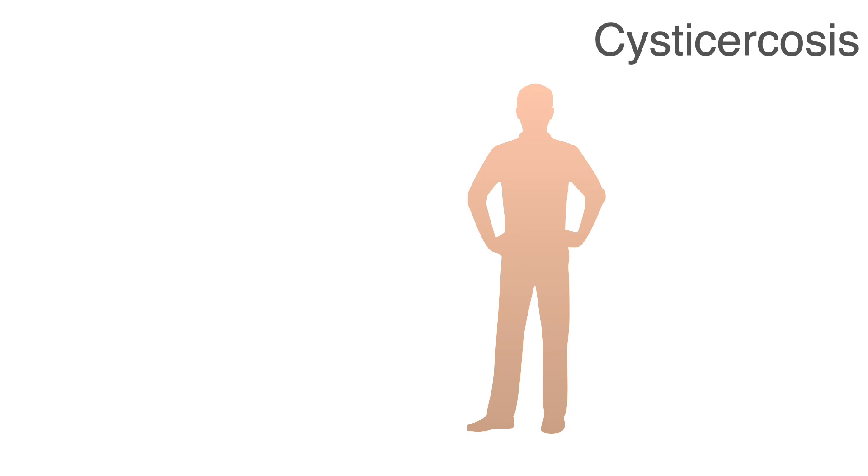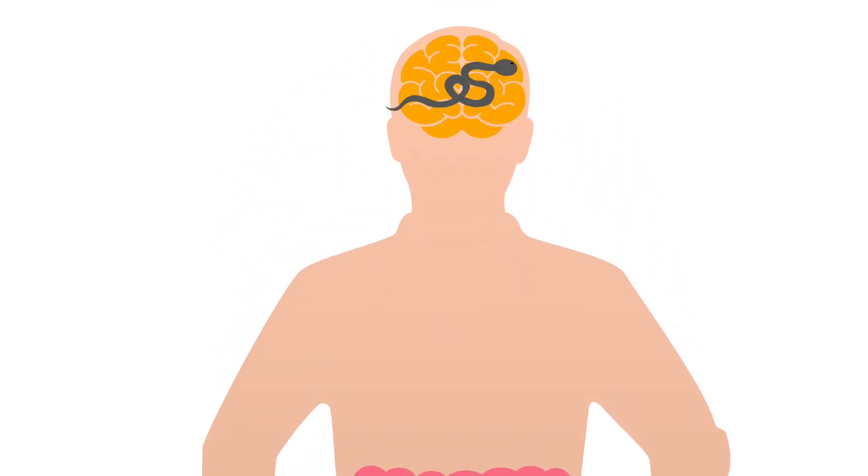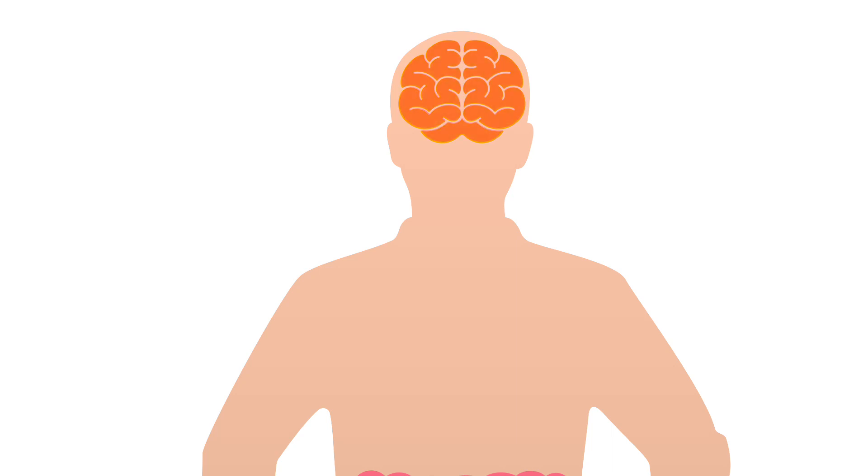On the other hand, cysticercosis also starts with ingestion of the eggs, but the worms eventually make their way to the brain and lead to symptoms ranging anywhere from headache to blindness or seizures.